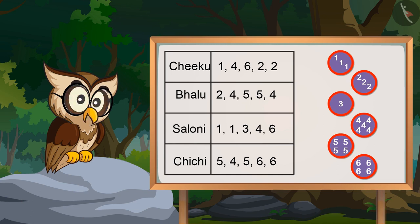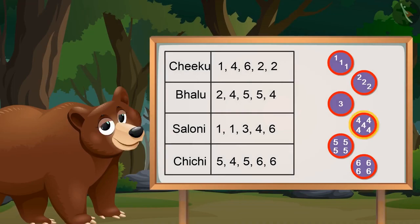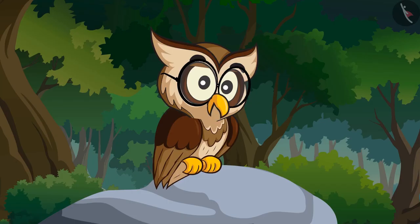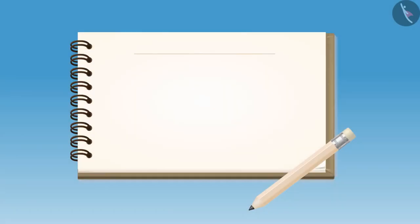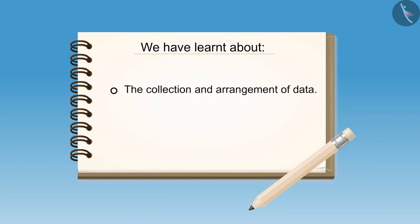Now tell me, which number came for the highest number of times and which one for the least? Four came for the highest times — that is, five times — and three came for the least, only once. Absolutely right! So kids, in this video, we have learnt about the collection and arrangement of data.